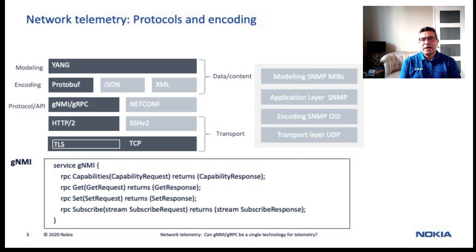Protobuf can also provide better performance than JSON in some data collection and telemetry use cases. So in the case of NETCONF, the encoding will be JSON or XML, and for the GNMI case, the encoding will be Protobuf. GNMI can also support JSON encoding, but it may not be ideal in data collection streaming given the performance advantages of Protobuf mentioned earlier.